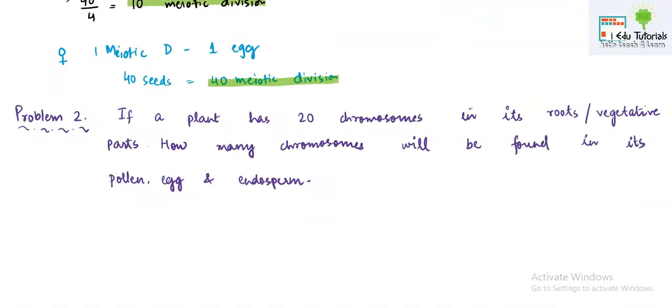The another type of problem which is basically asked in the boards is problem 2. If a plant has 20 chromosomes in its roots or vegetative parts, how many chromosomes will be found in its pollen, egg, and endosperm? Remember here the keyword is roots or the vegetative parts and the roots or the vegetative parts, they contain the somatic number means they are diploid. Only gametes are haploid. So 20 means 2N is given to you.